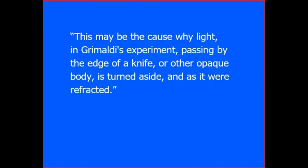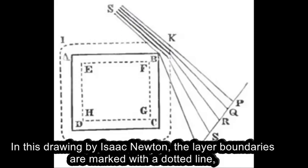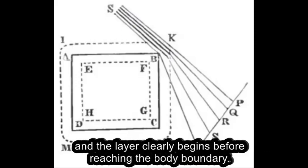or other opaque body, is turned aside, and as it were refracted. In this drawing by Isaac Newton, the layer boundaries are marked with a dotted line, and the layer clearly begins before reaching the body boundary.